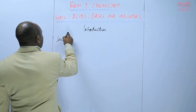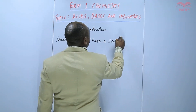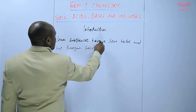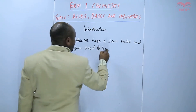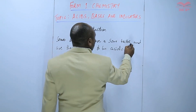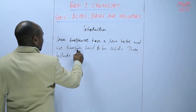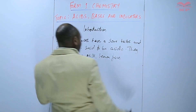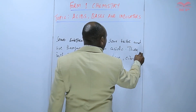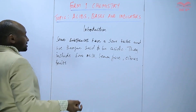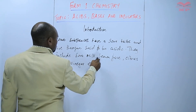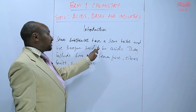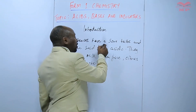Substances with a sour taste are said to be acidic, and they include sour milk, lemon juice, other citrus fruits, and vinegar. These substances are not acids themselves, but they contain acids in them, and that is what accounts for the sour taste.